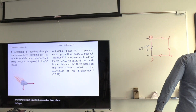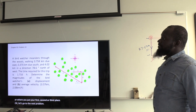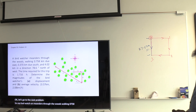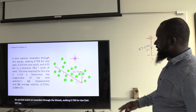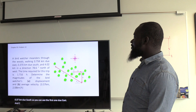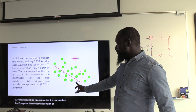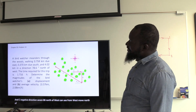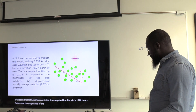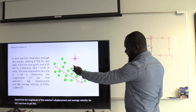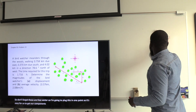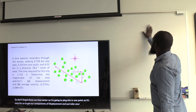A bird watcher meanders through the woods: walking 0.758 km due east (leg A), 0.370 km due south (leg B), and 4.02 km in a direction 78.6° north of west (leg C). Time required is 1.716 hours. We need the magnitude of displacement and average velocity. These are three vectors, so we'll find x and y components and combine them.